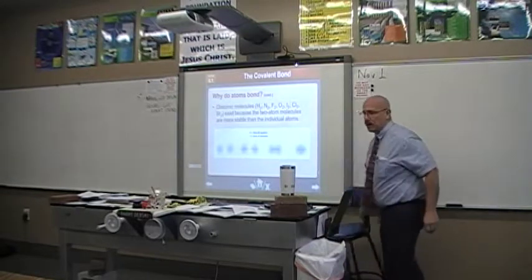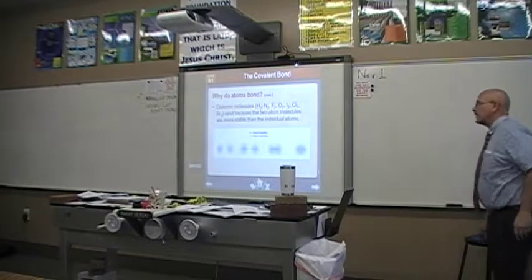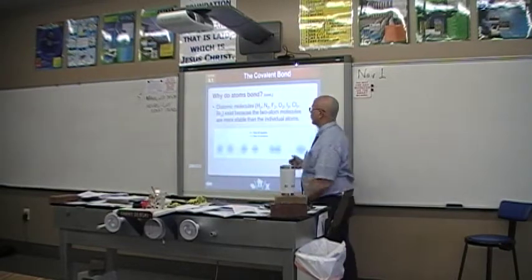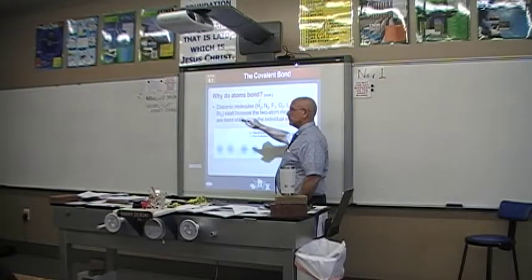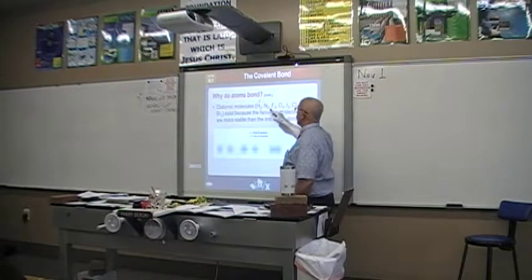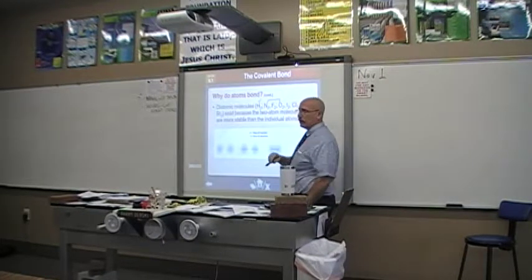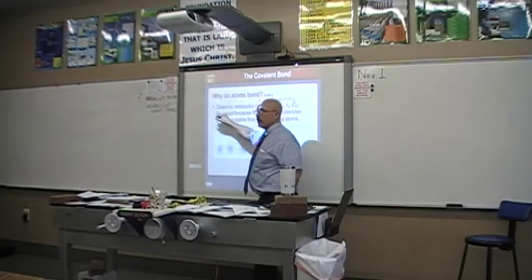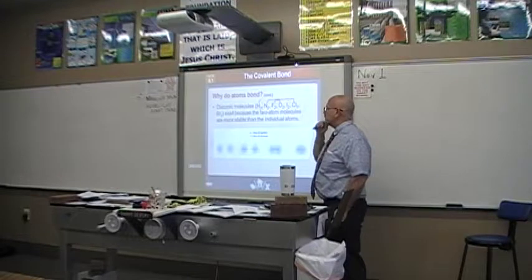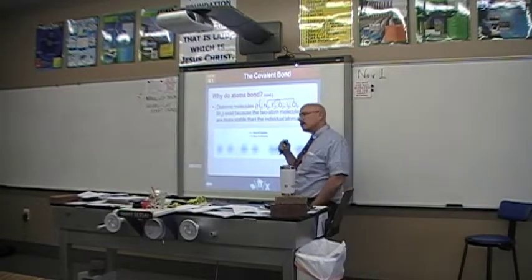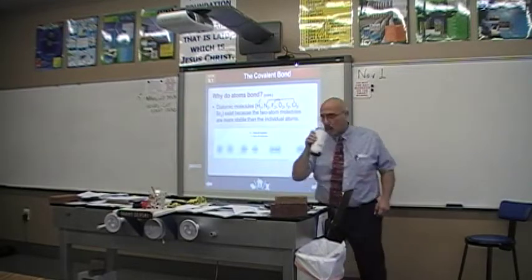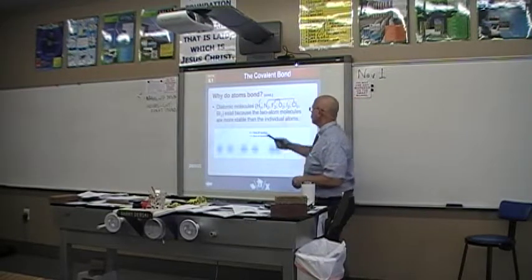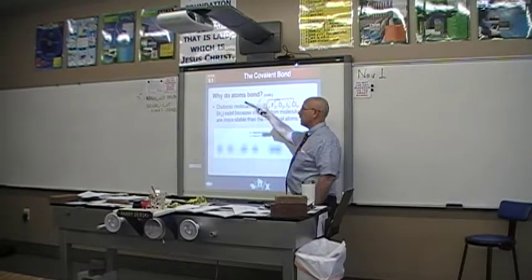There are seven elements on the periodic table that always occur as diatomic molecules or diatomic elements. They are hydrogen - the only one on the left-hand side - then nitrogen, oxygen, fluorine, chlorine, iodine, and bromine. These seven are called diatomic elements or diatomic molecules. I usually list them as H, N, O, F, Cl, Br, and I.